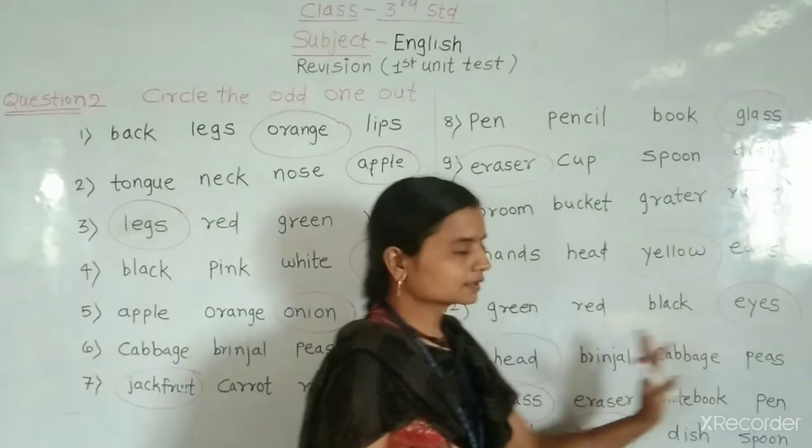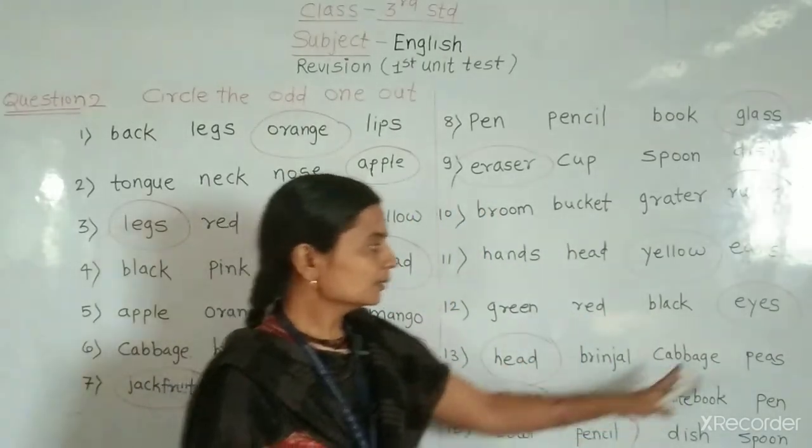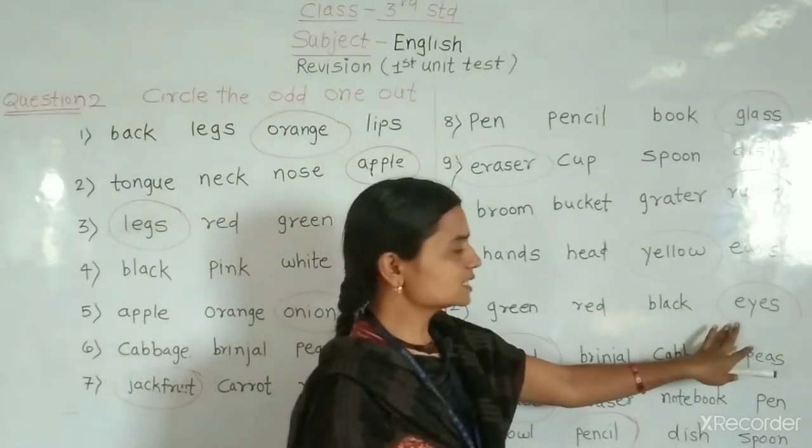Okay next. Then next 12. Green, red, black, eyes. Green, red, black. These are the names of colors. But eyes is the part of our body. That's why eyes is odd one or out.